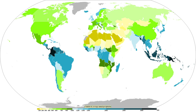The main ways water vapor is added to the air are: wind convergence into areas of upward motion, precipitation or virga falling from above, daytime heating evaporating water from the surface of oceans, water bodies or wet land, transpiration from plants, cool or dry air moving over warmer water, and lifting air over mountains.